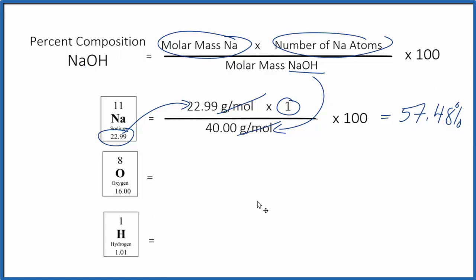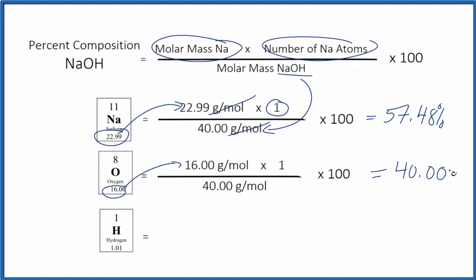It's the same process for oxygen and hydrogen. So for oxygen, we have our molar mass just for the oxygen atom. We only have one of them here. And then we multiply, divide by the molar mass of the entire compound. When we multiply by 100, we get 40.00%.